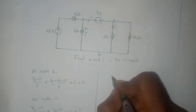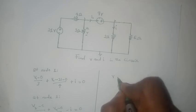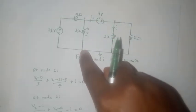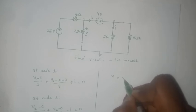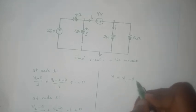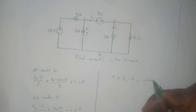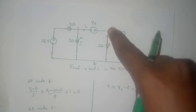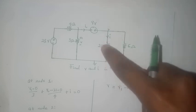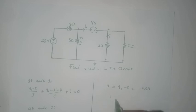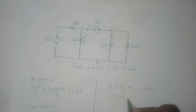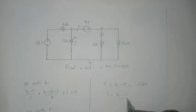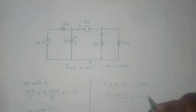And we were asked to find the value of v, that's the voltage drop across the 3 ohm resistor. So v would be equals to v1 minus zero, which equals v1, which would be equals to minus 0.6 volts. And the current i would be equals to v2 minus 0 divided by 2 ohms, and that would be 4.2 amperes.